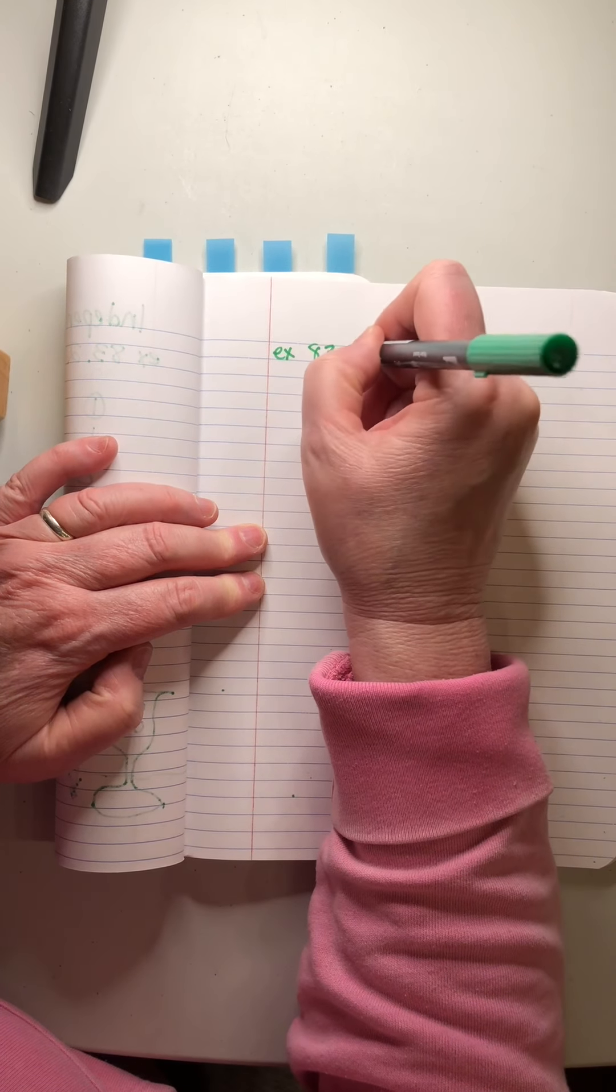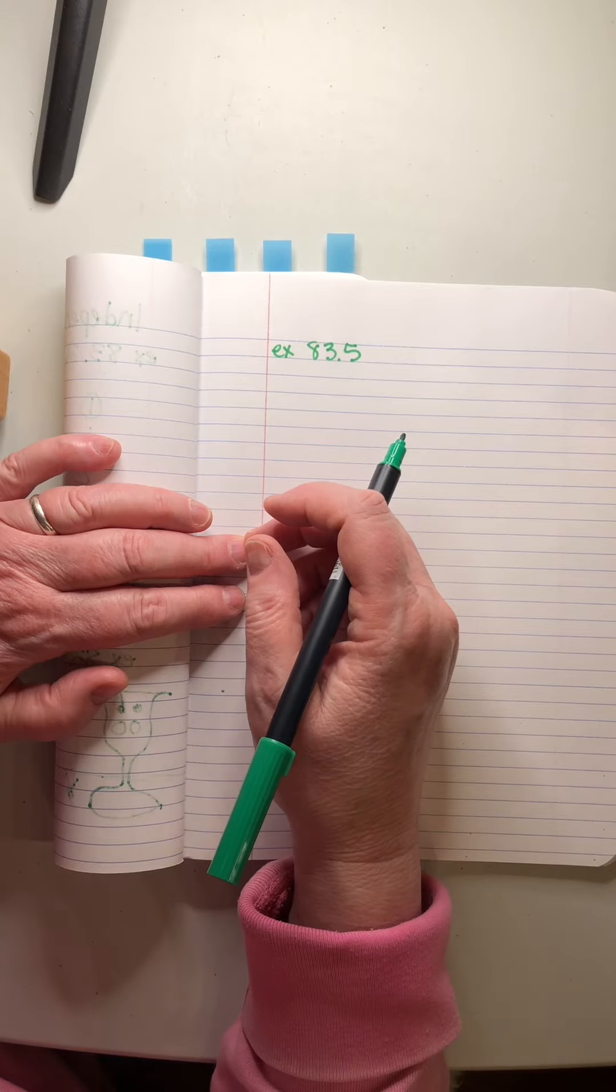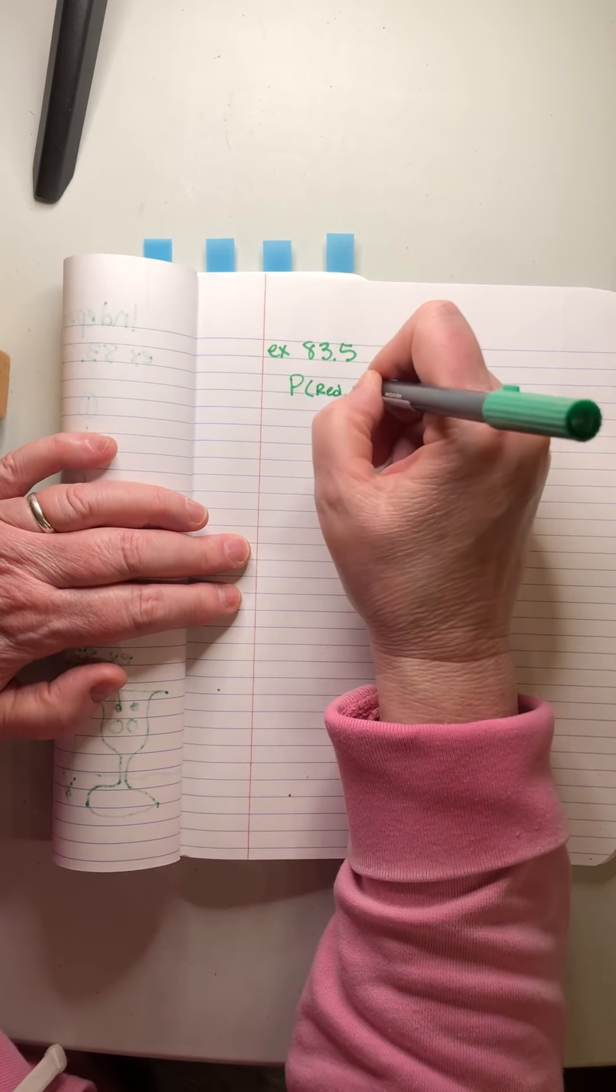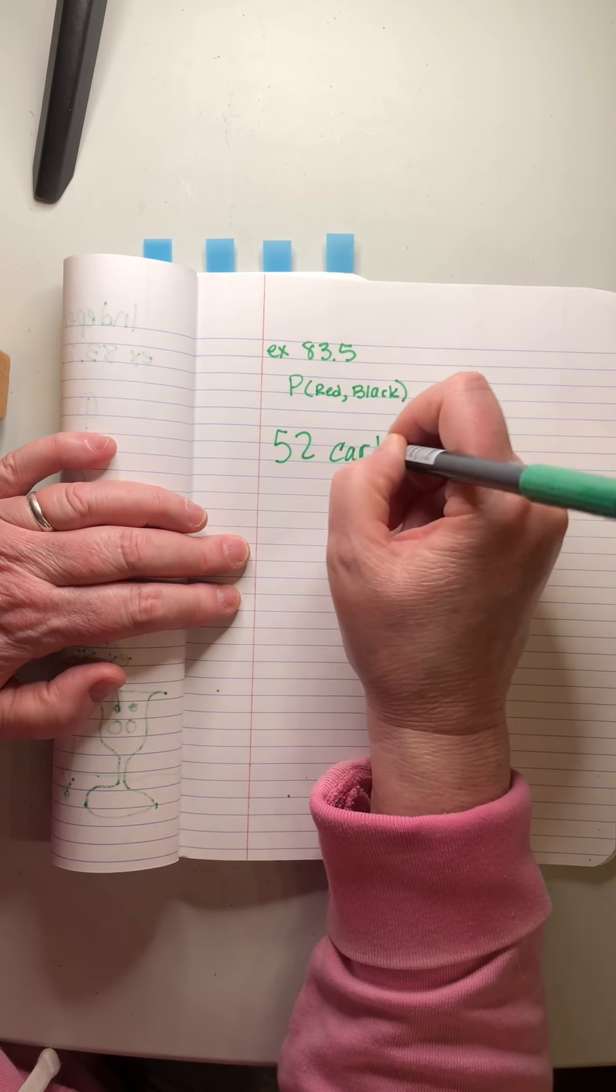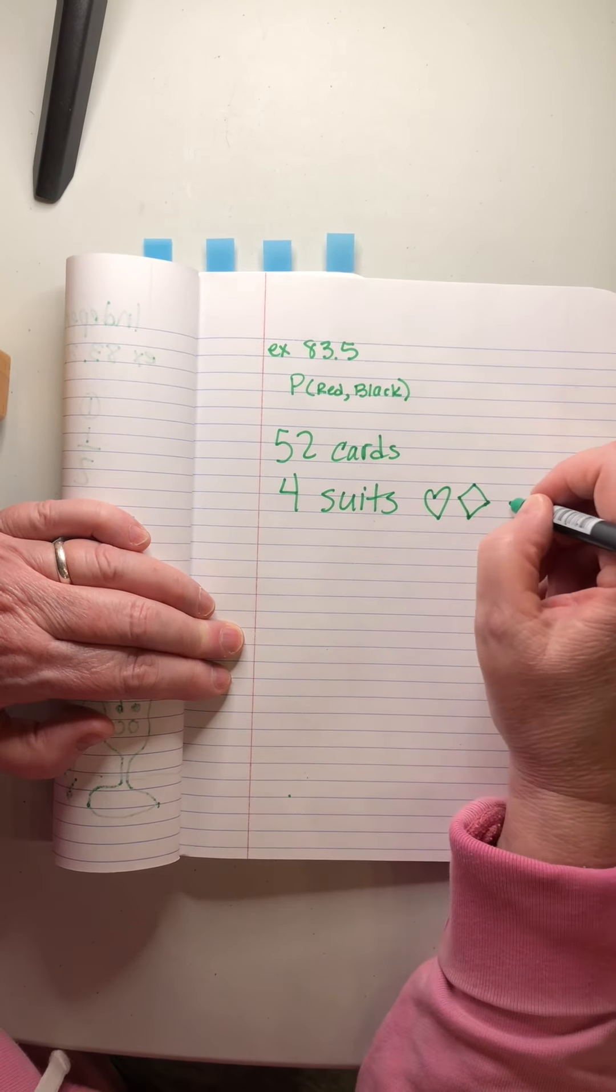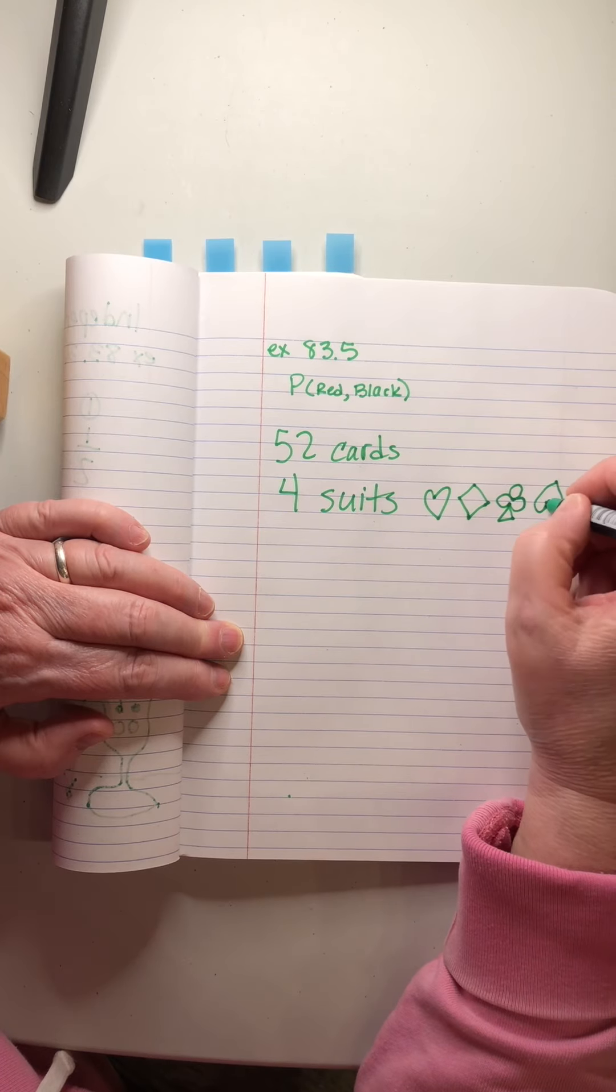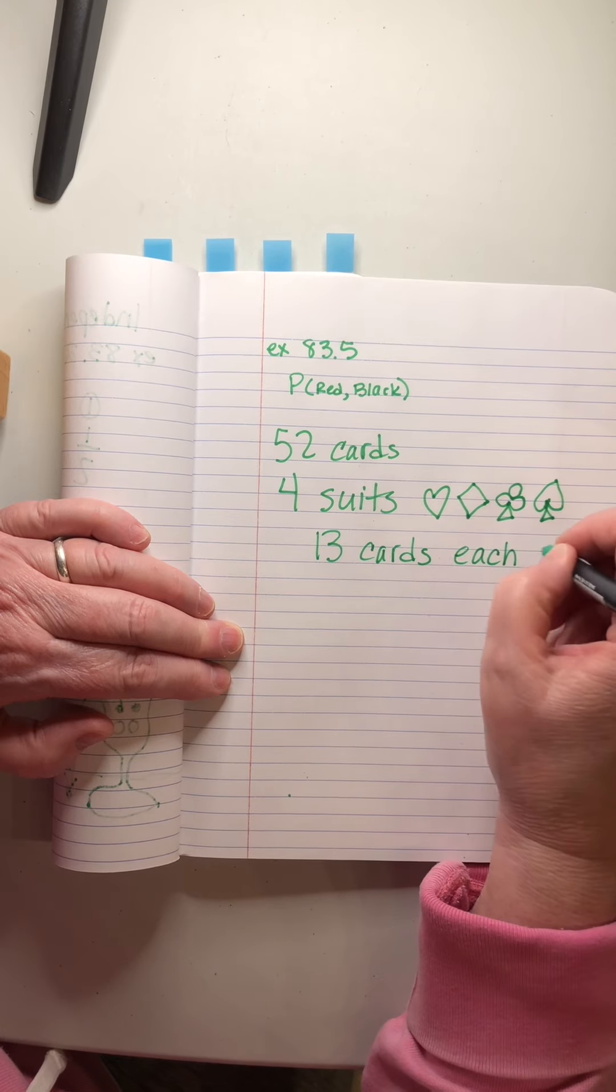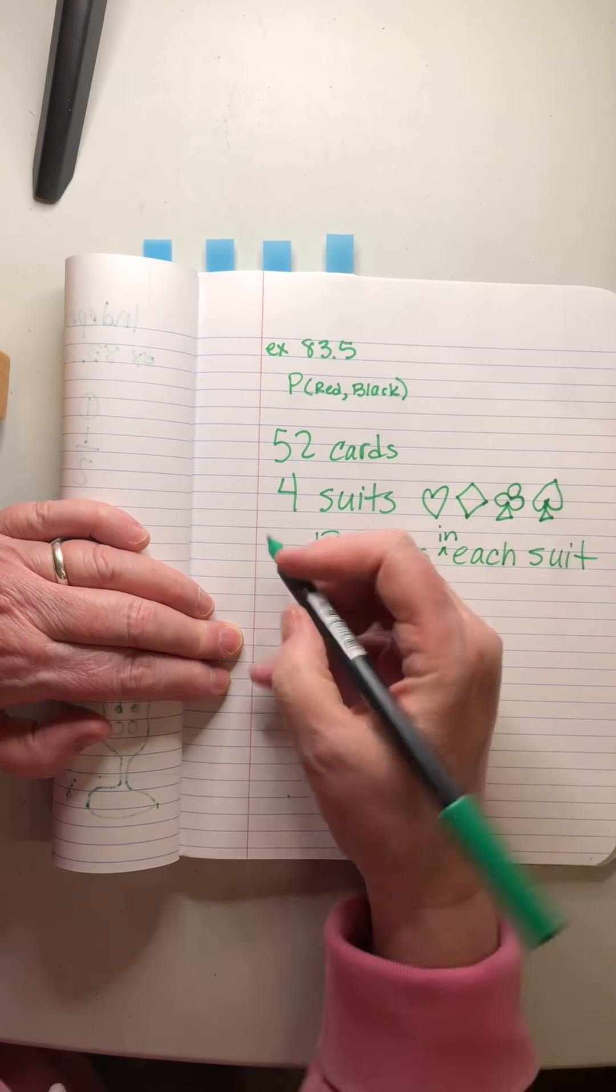Example 83.5: two cards are drawn from a 52 card deck without replacement. What is the probability that the first one is red and the second one is black? Okay, quick review on cards. There are 52 cards in a deck. There are four suits, and they are hearts and diamonds and clubs and spades, which is an upside down heart with a stem. Those are the four suits. There's 13 cards of each suit.